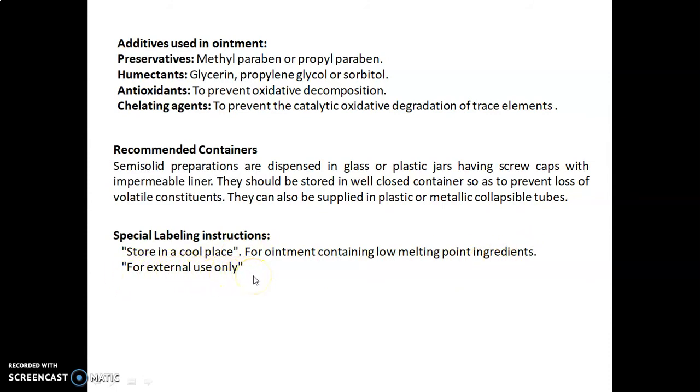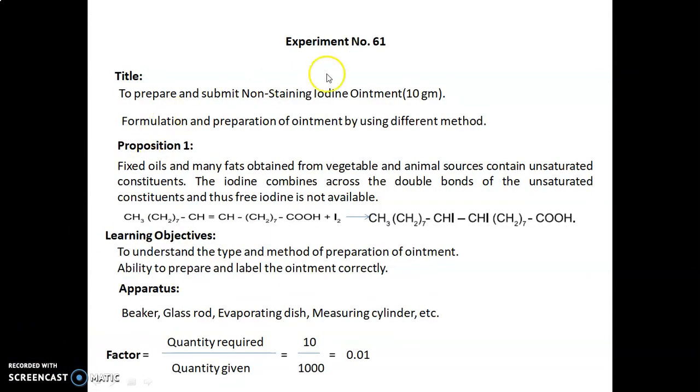In the next session we will see the experiments in detail. Experiment number 61: to prepare and submit non-staining iodine ointment 10 grams, formulation and preparation of ointment by using different methods. Proposition 1 is that fixed oils and many fats obtained from vegetable and animal sources contain unsaturated constituents. The iodine combines across the double bonds of the unsaturated constituents and thus free iodine is not available.